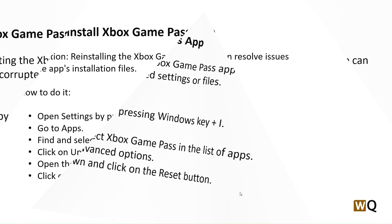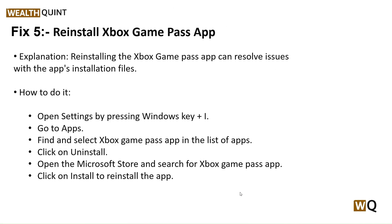Our fifth step is to reinstall the Xbox Game Pass app. Reinstalling it can resolve issues with corrupted installation files. Open Settings with Windows key + I, go to Apps, find Xbox Game Pass in the list, and click Uninstall. Then open the Microsoft Store, search for Xbox Game Pass, and click Install to reinstall the app.